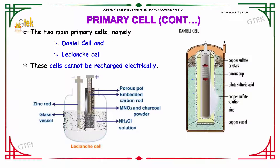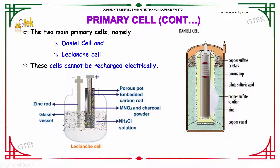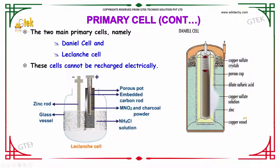The two main primary cells are: the first one is your Daniel cell, the other one is your Leclanche cell. These cells cannot be recharged electrically. You are able to see a typical picture of your Daniel cell and here you got your Leclanche cell.